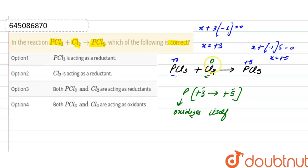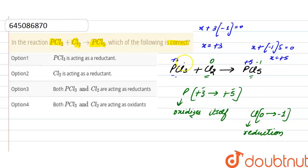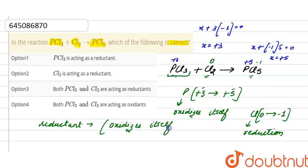The oxidation number of chlorine in Cl₂ is zero, and in PCl₅ it is minus one, so chlorine goes from zero to minus one — meaning chlorine undergoes reduction. Therefore, PCl₃ behaves as a reductant, which oxidizes itself and reduces others. The correct option is option one: PCl₃ acts as a reductant.